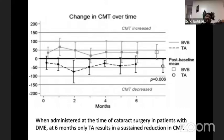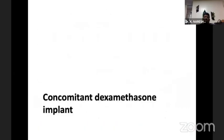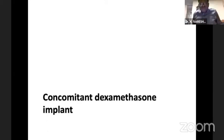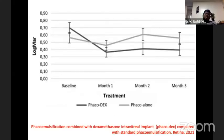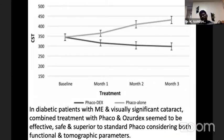There is a sustained reduction in central macular thickness when using Triamcinolone acetonide in patients with diabetic macular edema during cataract surgery. Another option is Ozurdex, a depot-release implant. When done concurrently, the results are quite good. Diabetic patients with significant macular edema do better combining phacoemulsification with Ozurdex compared to phacoemulsification alone, though the cost is escalated and affordability becomes poorer.